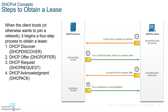The client and server will always use four handshaking signals between them before the server gives out the IP address information to the client. The server will always use UDP port 67 to communicate.